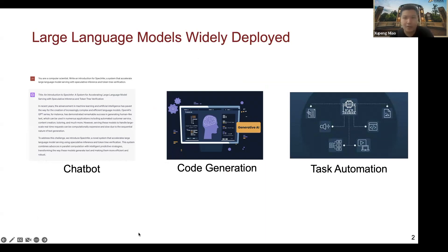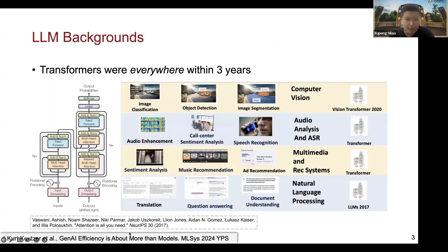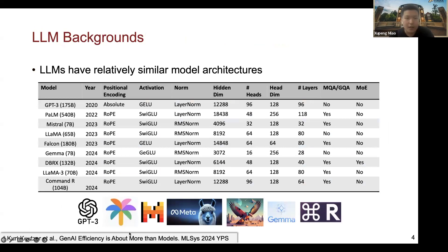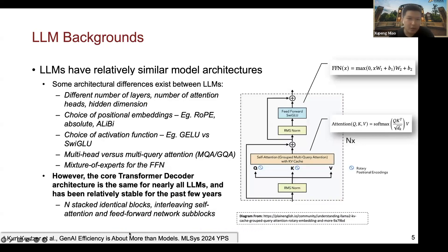Large language models are dominating many applications in our daily lives today. The fundamental factor behind large language models is the transformer model architecture, and more specifically, the attention calculation, which is the key challenge in large language model computation. Each transformer module consists of both attention calculation and feed-forward networks, and these two parts are the key challenge in the larger model calculation process.